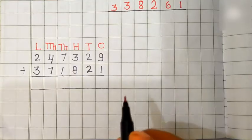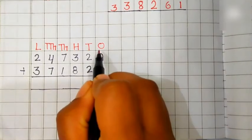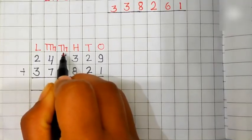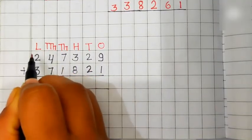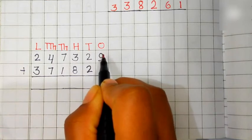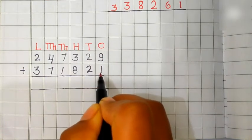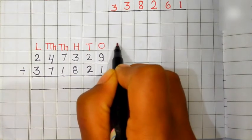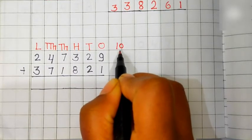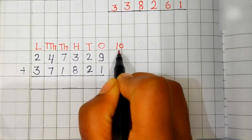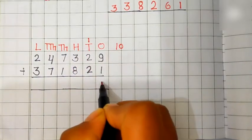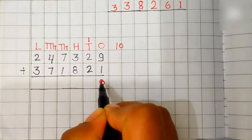We solve last example. This is 1 place, 10 place, 100 place, 1000 place, 10,000 place and this is lakh place. Let's add ones first. 9 plus 1 is equal to 10. 10 is a two-digit number. We will carry 1 to the 10 place and 0 comes in the answer.